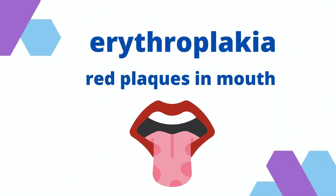Erythroplakia is similar — it is a red plaque but has 17 times higher incidence of malignant transformation compared to leukoplakia. It is more difficult to diagnose because it is a red patch and needs a specialist to look into it. This can be very easily cured by removing it, and you do not allow it to go into cancer. So you are treating a pre-malignant condition and avoiding cancer — cancer can be prevented.